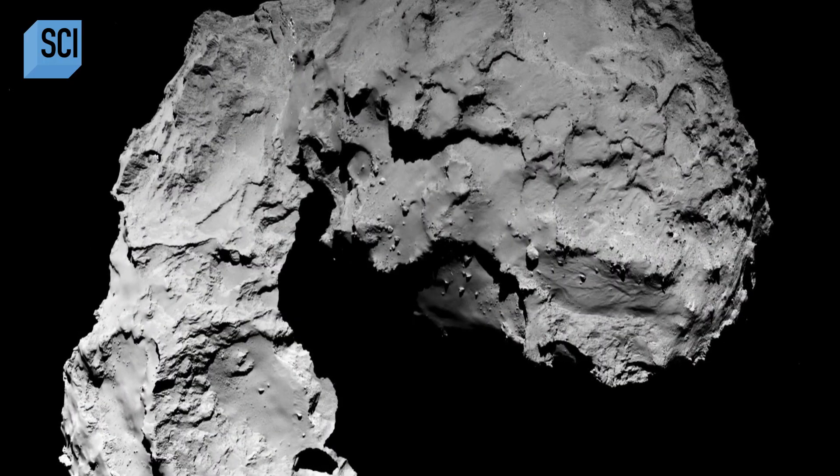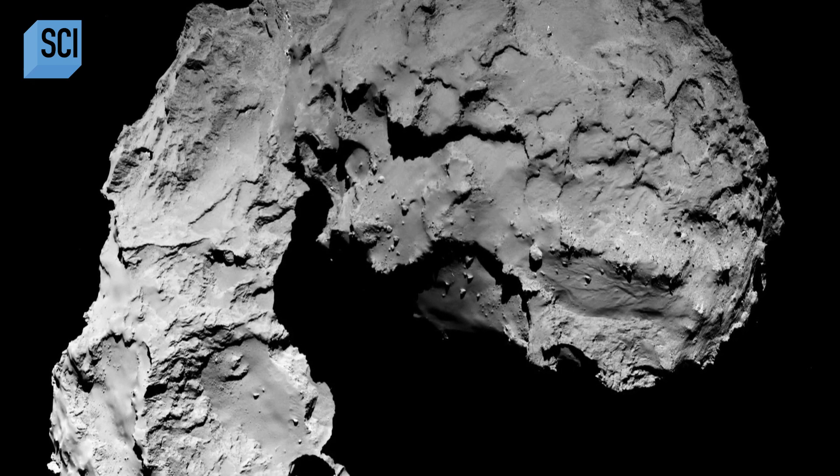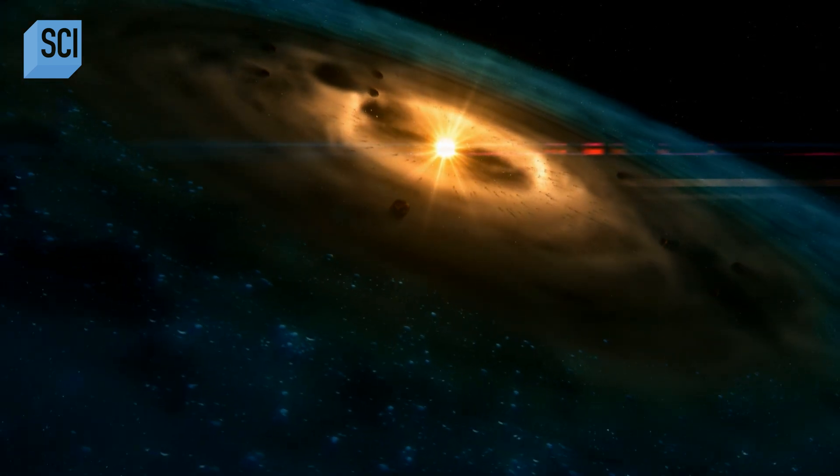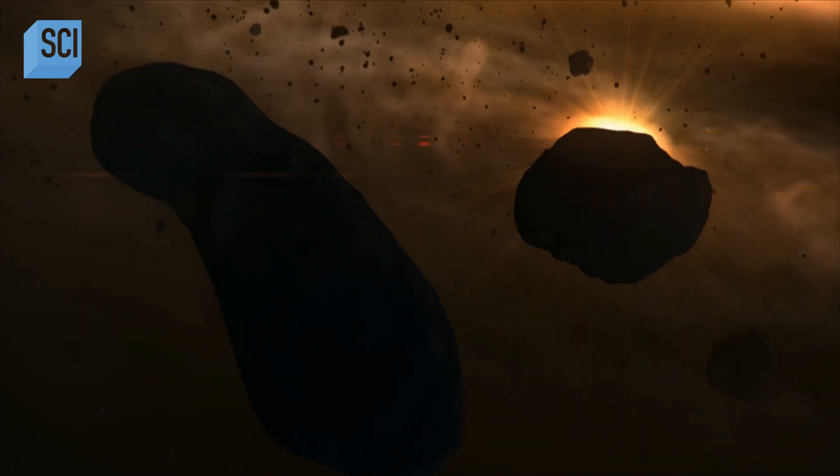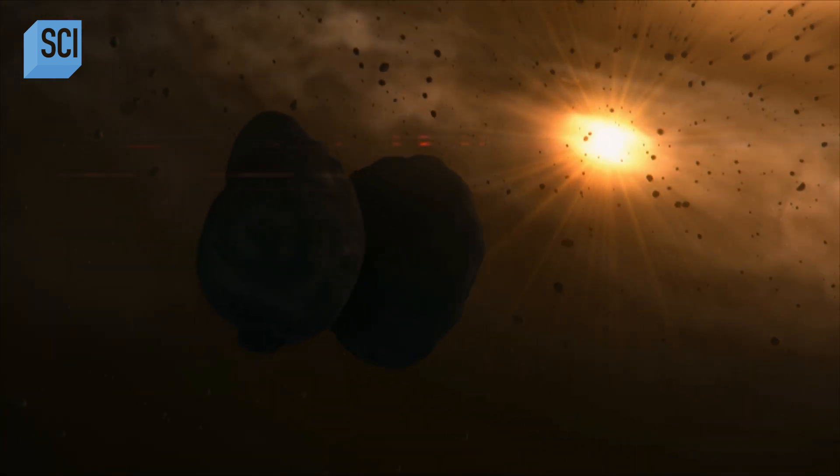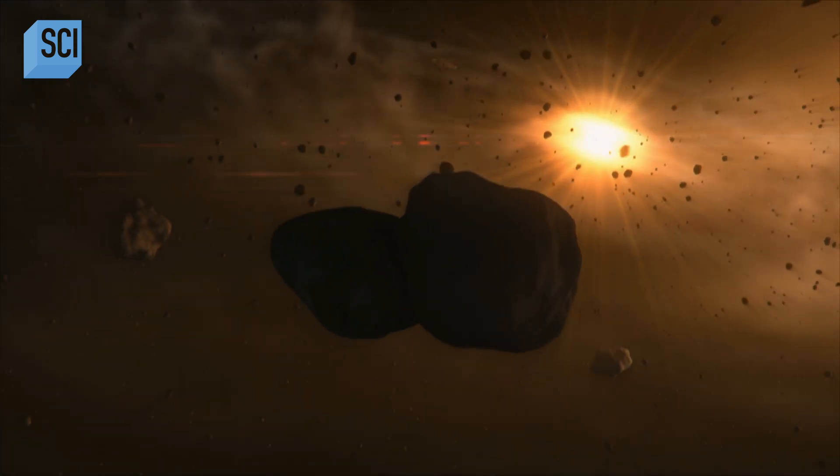The layers proved that 67P was originally two separate objects that fused together. The process of potentially putting comet 67P together from two different pieces is important because it can teach us about what was happening in the early solar system. So as far as we can tell, these two separate bodies must have been formed in the same area. They're very similar in composition, but they are so light and fluffy that they would have destroyed each other if they had hit fast. They had a low speed collision and basically stuck together like two wet snowballs.